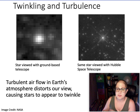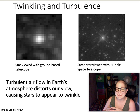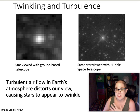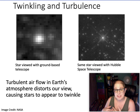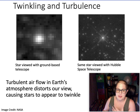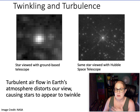Twinkling distorts our views. It's real pretty, but when you look through a telescope it means the light is bouncing around and you can't get a clear image. That's why the Hubble Space Telescope, even though it looks at visible wavelengths observable from the ground, does a much better job than a ground-based telescope of the same size — because it's above all that atmosphere.